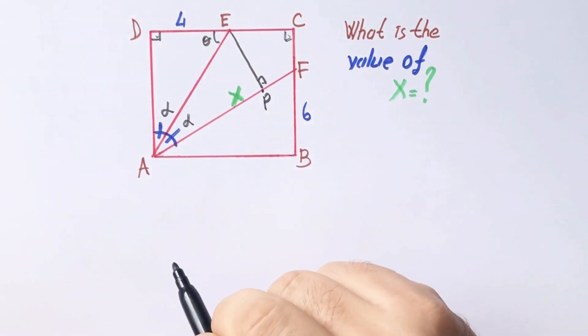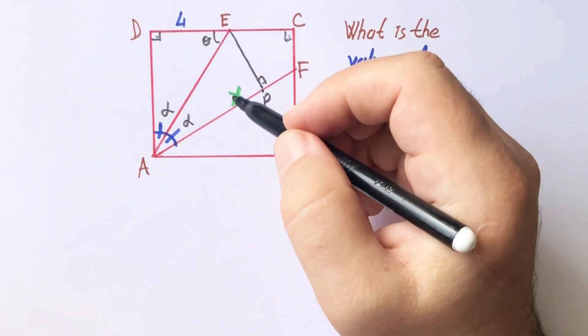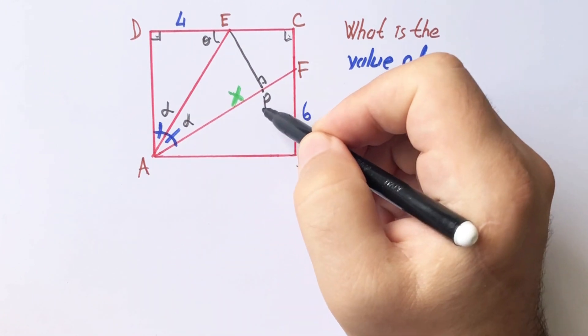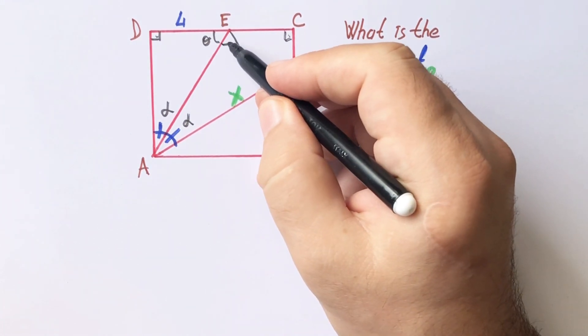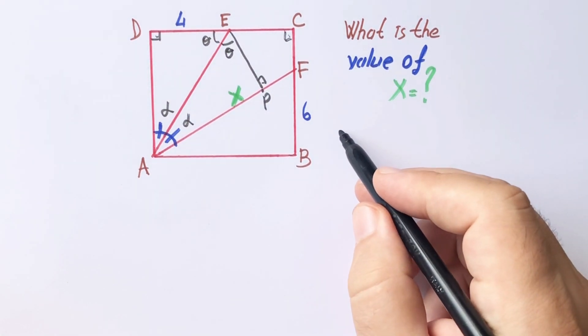Let's call this point P. Triangle ADE and triangle APE are congruent, right, because they have same angles.